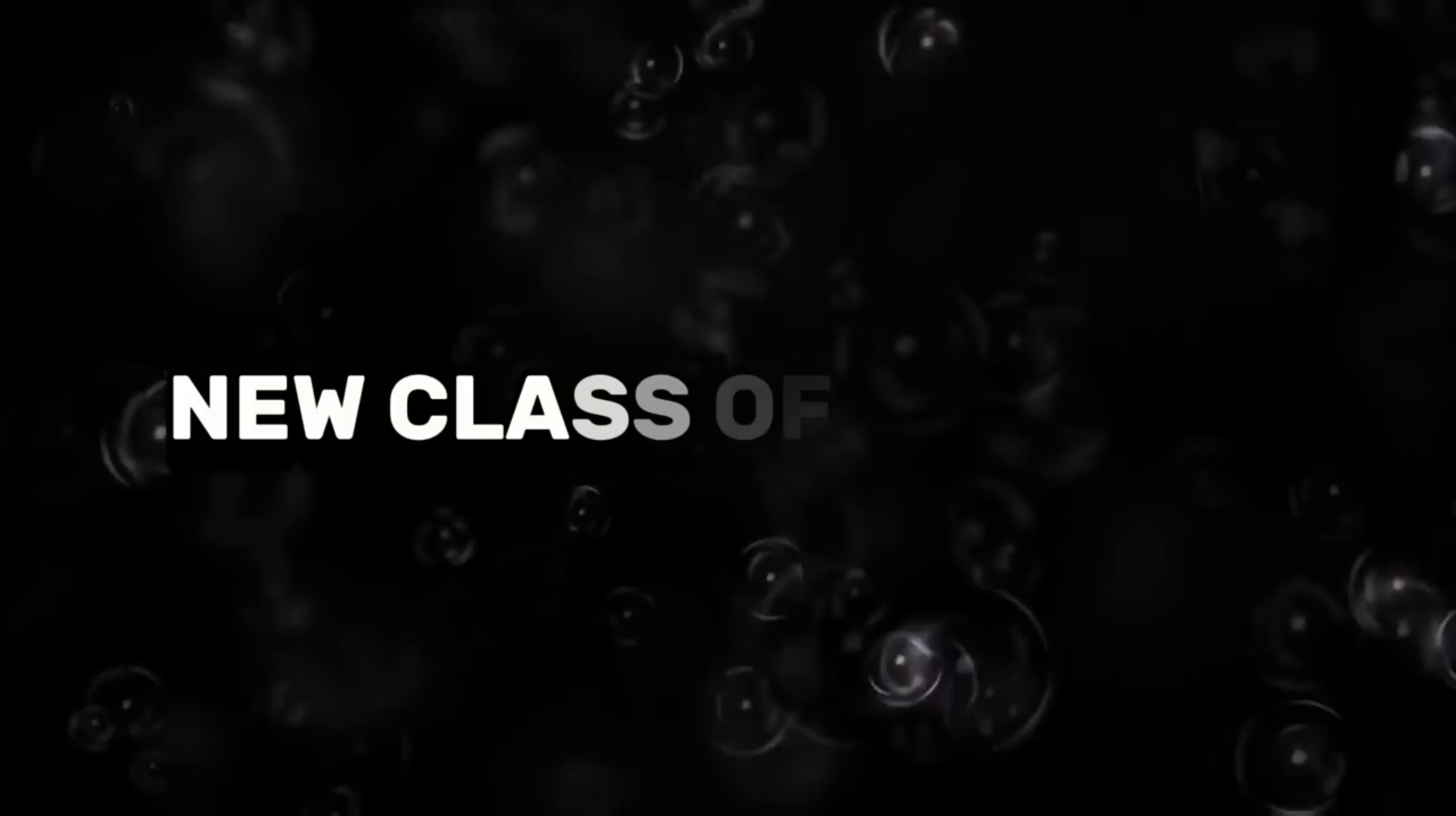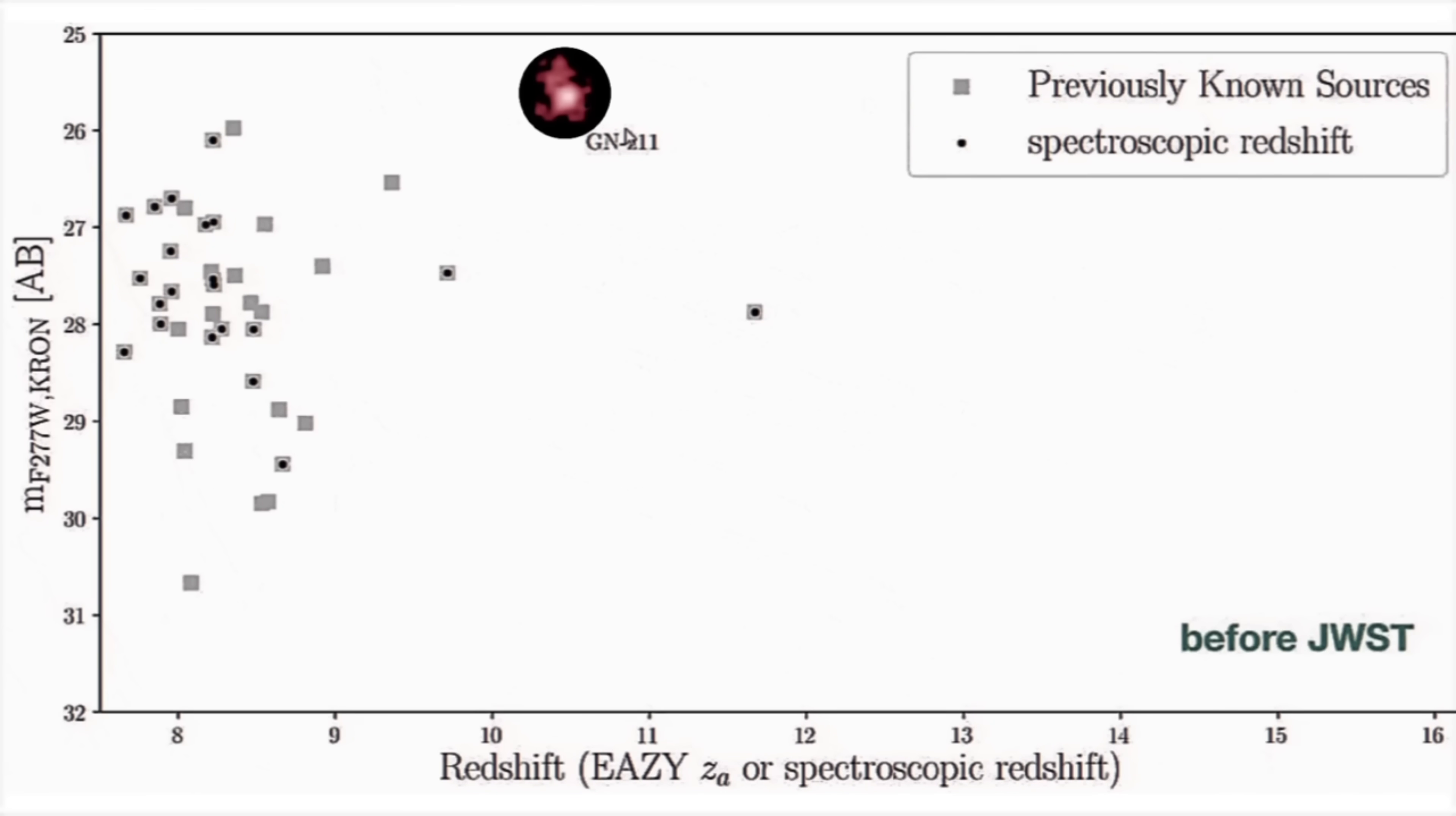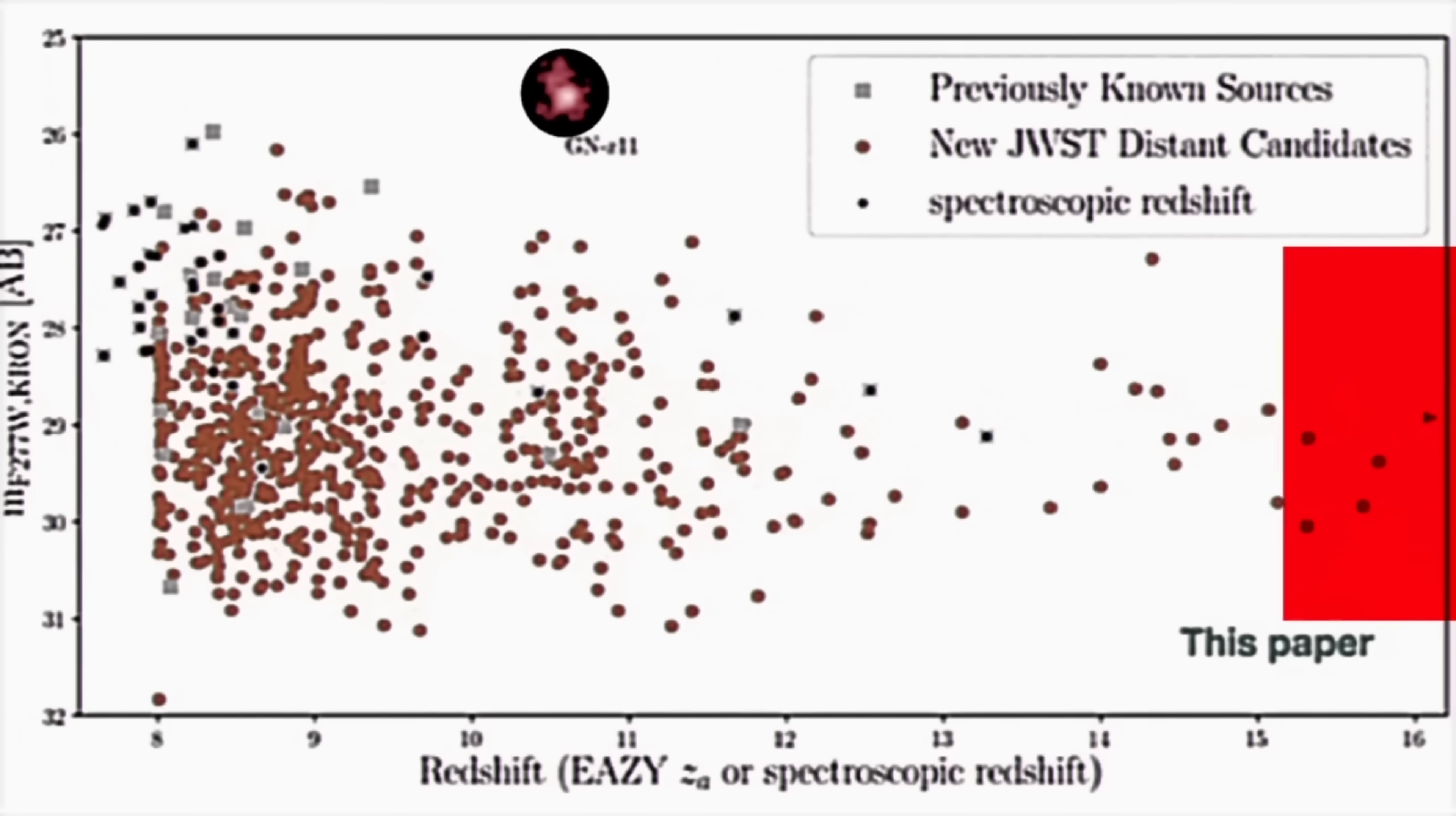In fact, NASA scientists have referred to these mysterious objects as a new class of galaxies. Look at this data. These are the confirmed galaxies discovered before the James Webb Space Telescope. Until that time, GNZ 11 was the most distant galaxy ever discovered. But when Webb Telescope released its early observations, the results shocked scientists.